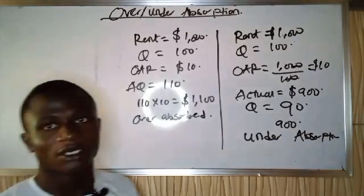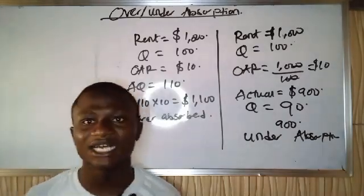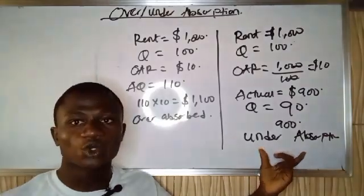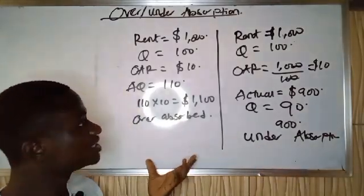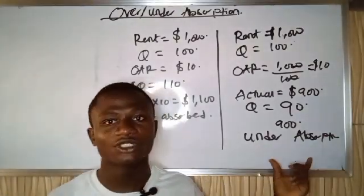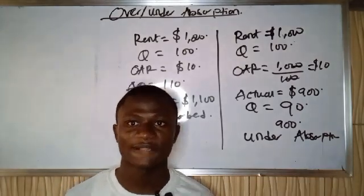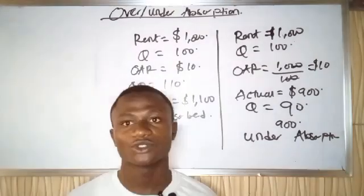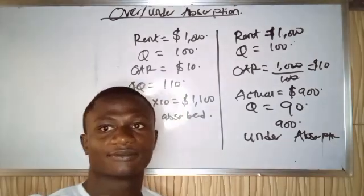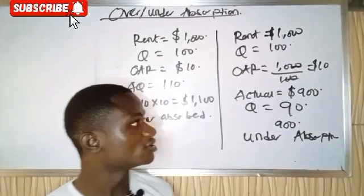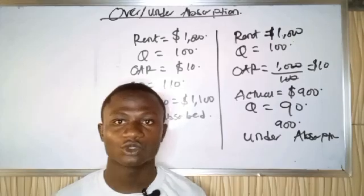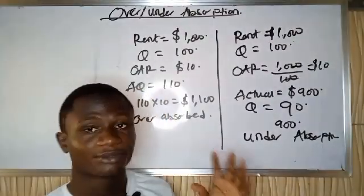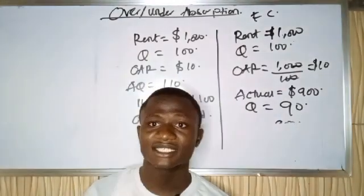So to summarize: when the overhead is not fully covered, that is under absorption, and when more than the overhead is covered, that is over absorption. We treat under absorption as a loss, and we treat over absorption as a gain or profit.